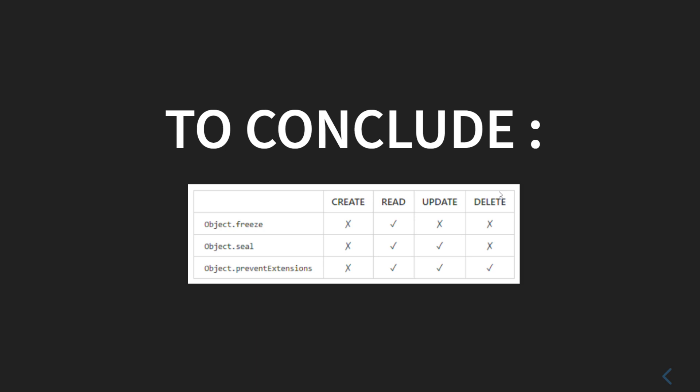To summarize with a CRUD comparison: Object.freeze() — does not allow Create, allows Read, does not allow Update, does not allow Delete. Object.seal() — does not allow Create, allows Read, allows Update, does not allow Delete. Object.preventExtensions() — does not allow Create, allows Read, allows Update, allows Delete. It's very important to understand the actual power these methods give you and which scenarios call for each one.